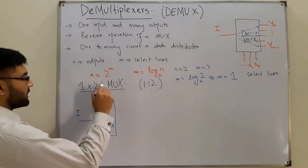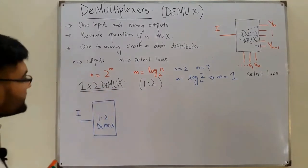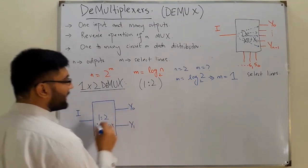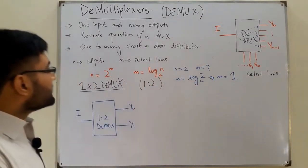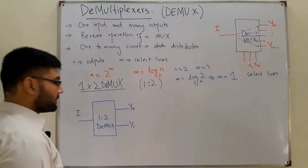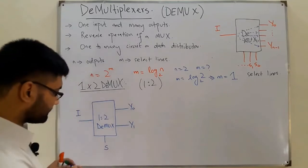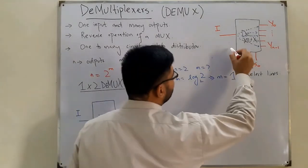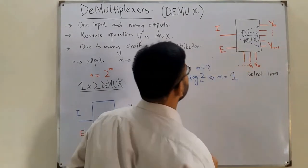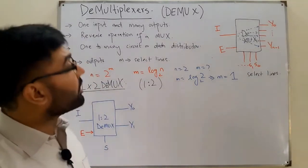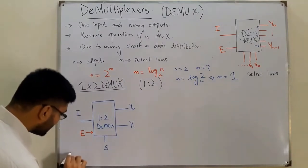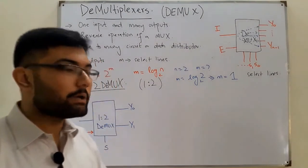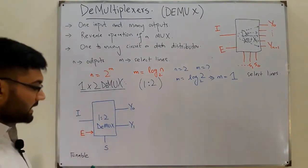We have two outputs: Y₀ and Y₁ — going up to Yₙ₋₁, which is Y₁ since n=2. There is a single select line S. We also have an enable input, just as in multiplexers. When the enable is zero the circuit is not operating and all outputs are zero.